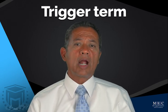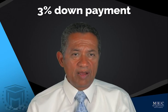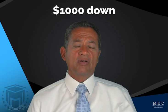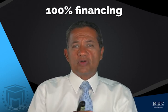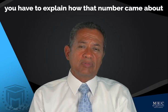A trigger term is a requirement to disclose additional information — a phrase that represents an attractive feature or motivates the borrower to act. Examples include a 3% down payment, a thousand dollars down, or 'we offer 100% financing.' If a trigger term appears, you must fully disclose everything associated with it: the price of the home, down payment required, total number of payments, monthly payment, due dates, APR, and how you arrived at that number.